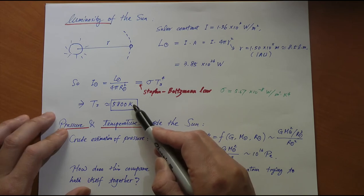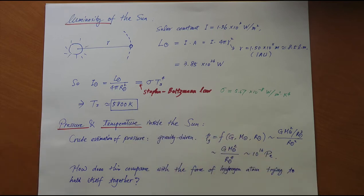So if you assume the surface of the sun to be a 5,800 Kelvin black body, you can not only understand the profile, you can also understand the total amount of energy radiated per second. And the other thing I want to talk about, very importantly, is the pressure and the temperature inside the sun.